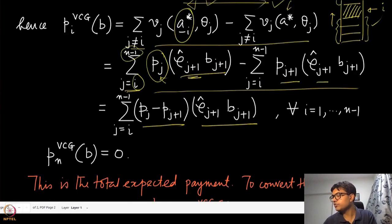The last agent in this list will always have a zero payment. If that agent is removed, the allocation of any of the other agents do not change. Therefore, both these things will essentially cancel out and they will have only zero.